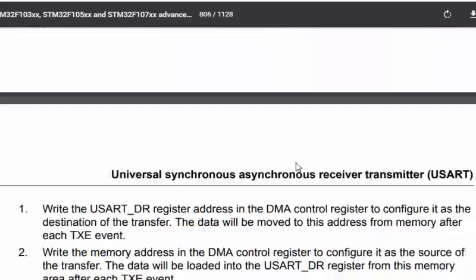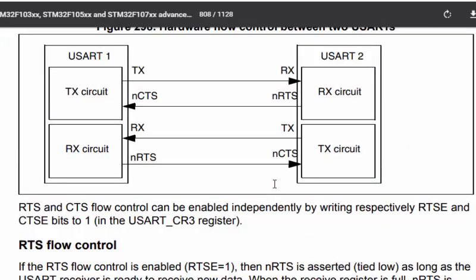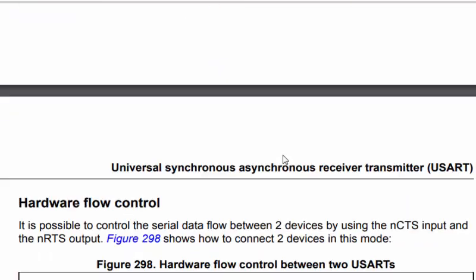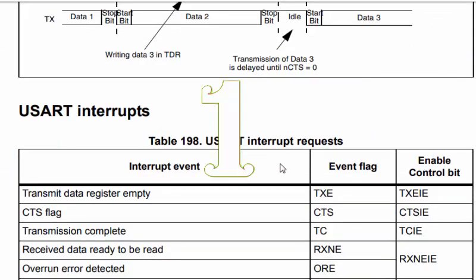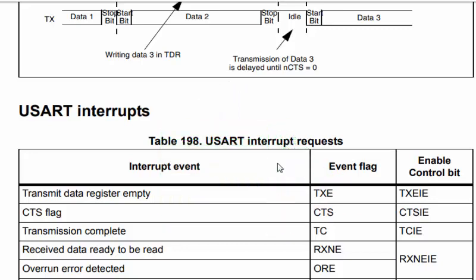We are going to talk about how to configure this on the STM32F103. Although for full USART you may need extra pins — CTS and RTS — because we are using totally asynchronous mode, we are not using hardware flow control or synchronous mode, so we don't need CTS and RTS pins. I may cover those in a future lecture.